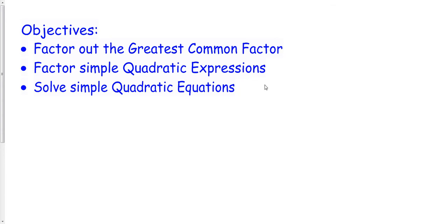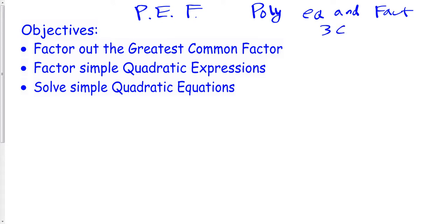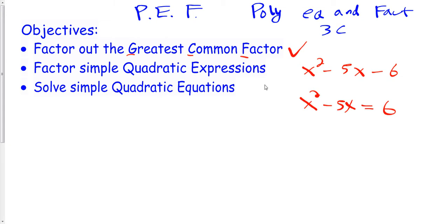We are basically trying to factor some things that are a little trickier today. We're going to call these notes polynomial equations and factoring, and this is 3C. Our goals for today are to be able to take out the GCF — greatest common factor — factor simple quadratic expressions like x squared minus 5x minus 6, and solve quadratic equations. It's the same general premise, same numbers and techniques, but there's a little bit more to it.